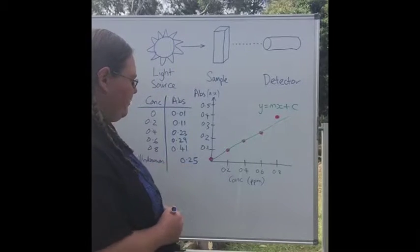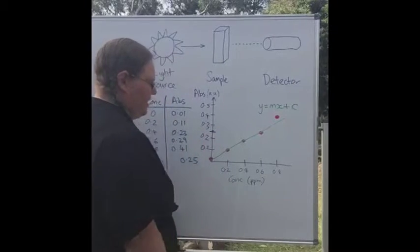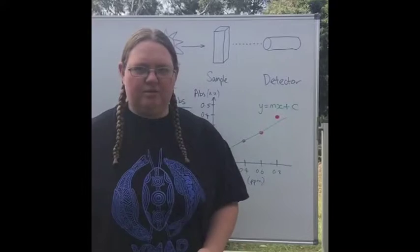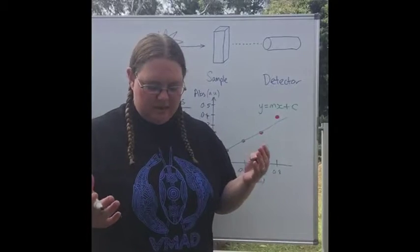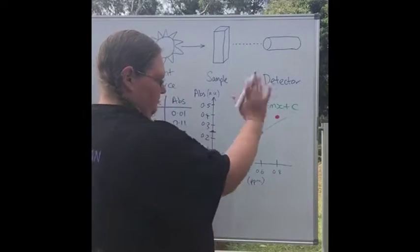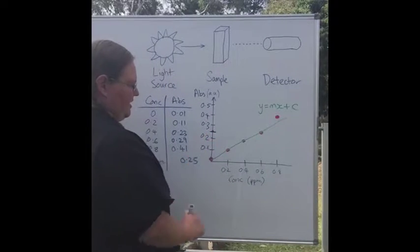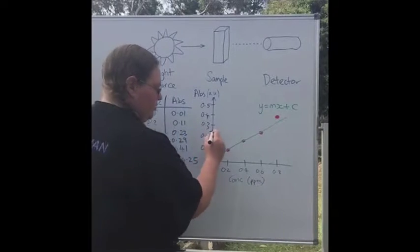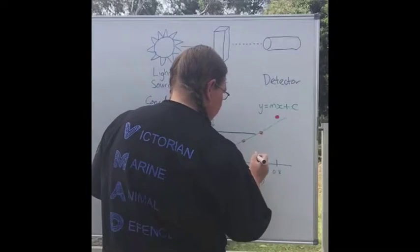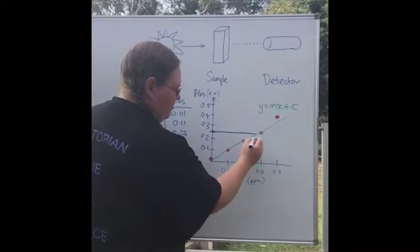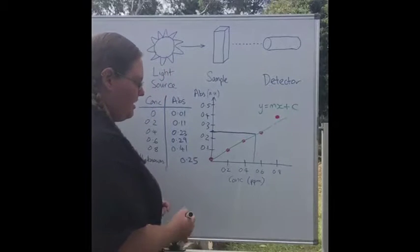The other way to do it is to take that 0.25. We find that on our y-axis here, right in the middle. If you do this, make sure you use a ruler and graph paper. I've just done it by hand here, but it still shows the concept. Here's our 0.25. You would get a ruler and rule across very accurately.